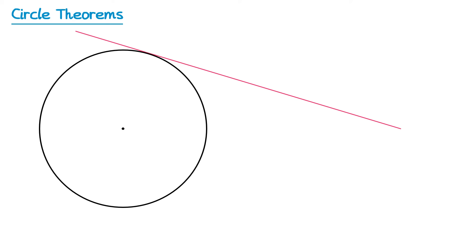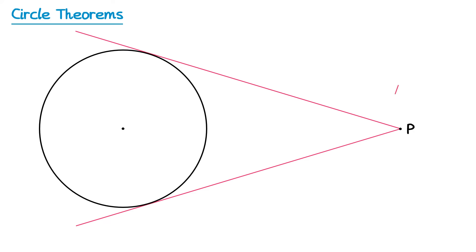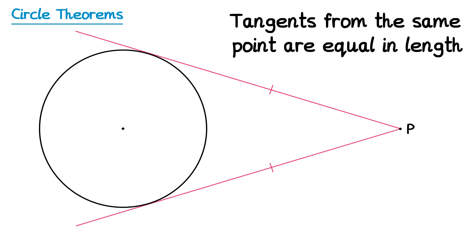Now if we stick with this same diagram, we can do some more theorems. If we create a point at the end of this tangent on the right hand side and call that P, and then draw a second tangent from P to the circle, the distance from P to where each tangent touches the circle will be the same length for both tangents. We usually draw a line across both to show they're the same length. You could say that tangents from the same point are equal in length.